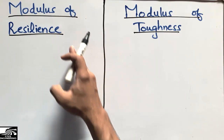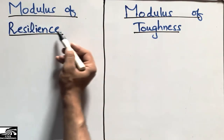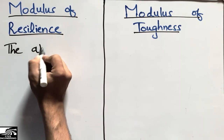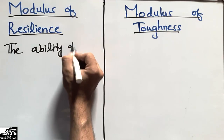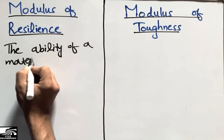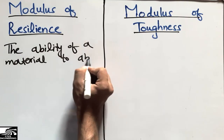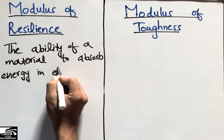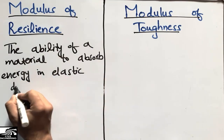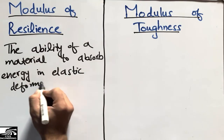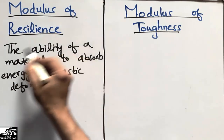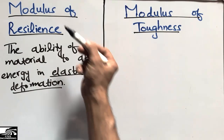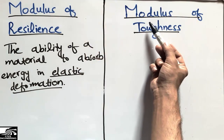First of all, how to define the modulus of resilience. It is the ability of a material to absorb energy in elastic deformation. The maximum energy absorbed in elastic deformation is what we call the modulus of resilience.